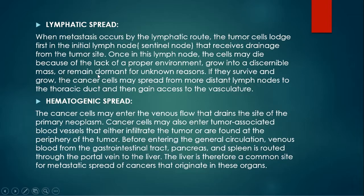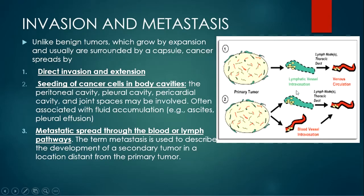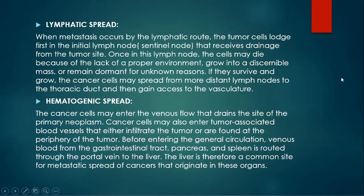Alternatively, cells may remain dormant for unknown reasons. If they survive, they will grow, and cancer cells may spread from more distant lymph nodes to the thoracic duct and ultimately gain access to the vasculature. Through lymphatic vessels, spread can go to lymph nodes, to the thoracic duct, and ultimately to the venous circulation.